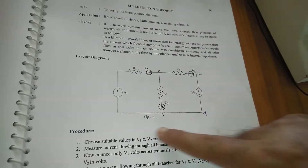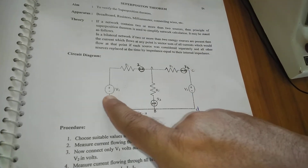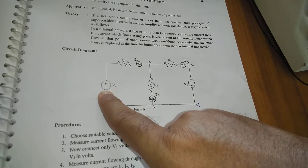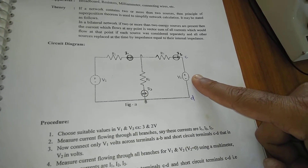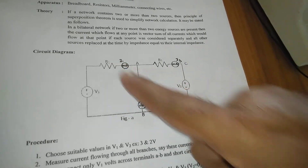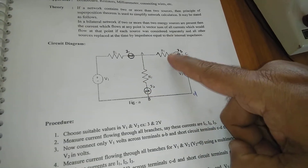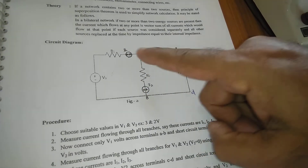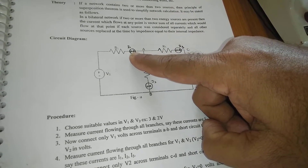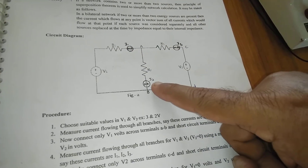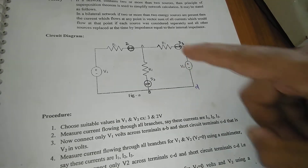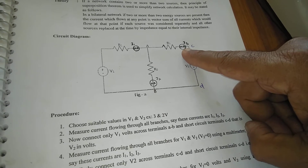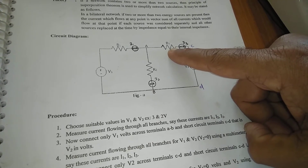This is the circuit diagram to verify the superposition theorem. In this one, this is V1 voltage, that is a battery. It is another battery, it is taken as V2. This is the resistance R1, this is the resistance R2, this is the resistance R3. This is the milliammeter to measure the current across R1, that is I1. This is another milliammeter to measure the current through R2, this is I2, and this is another milliammeter to measure the current across the resistance R3.